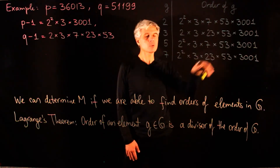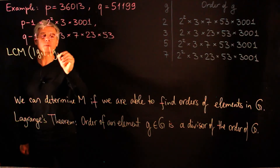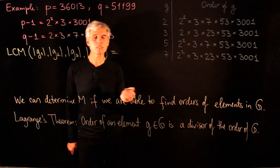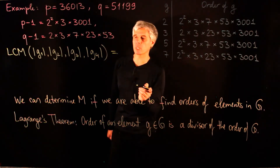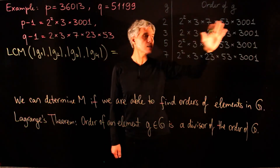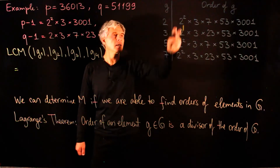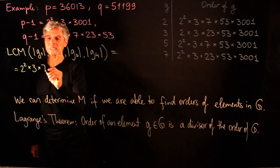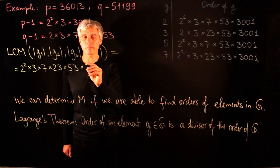Once we have computed the orders of elements, we can calculate the least common multiple of the orders of g1, g2, g3, and g4. This LCM can be calculated using GCDs via the Euclidean algorithm since there is a simple relation between GCD and LCM. To compute this LCM, we don't need to know the factorizations, but since they are available to us, let's compute it using them. So the LCM will be 2² × 3 × 7 × 23 × 53 × 3001.